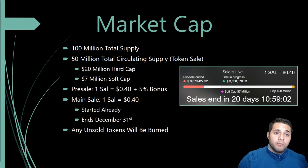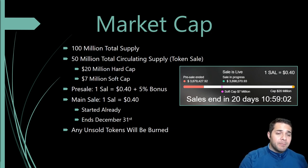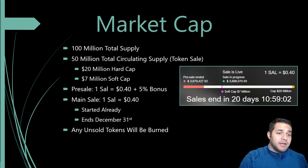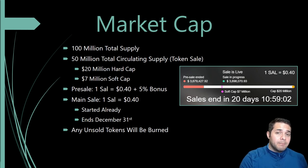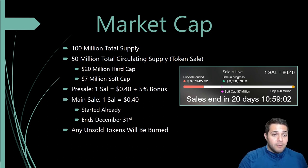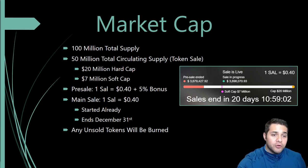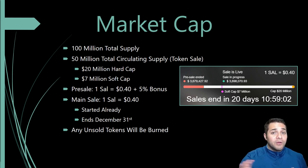For their market cap: we're looking at 100 million total supply, 50 million circulating supply at token sale, a $20 million hard cap, and a $7 million soft cap. If they only hit the soft cap, this will adjust the total supply and circulating supply. The pre-sale had a 5% bonus at 40 cents per Salpay, and the main sale is also 40 cents per Sal. The main sale has already started and ends December 31st. Any unsold tokens will be burned.